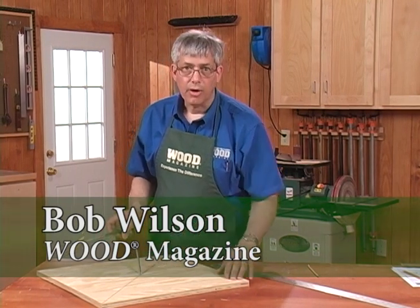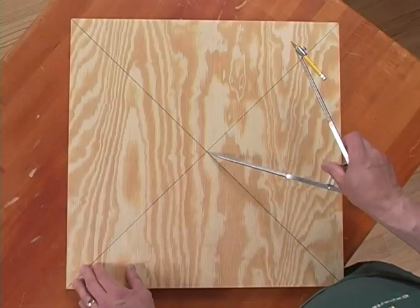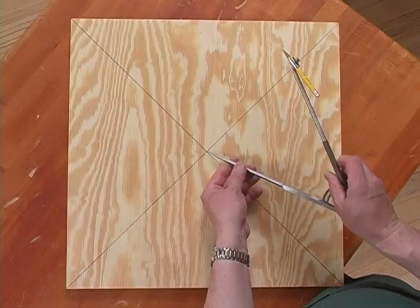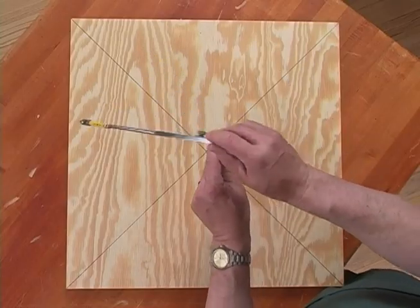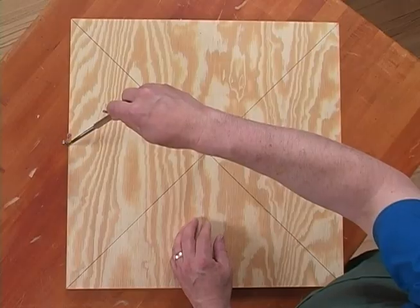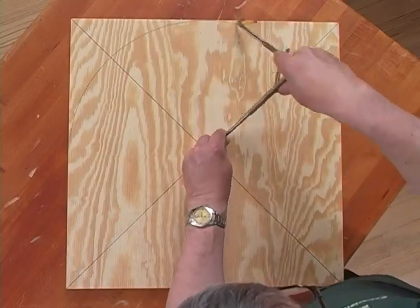We found the center of our piece of scrap here by drawing diagonal lines between the corners. Now we just place the tip of the compass at the intersection of the lines and scribe a line all the way around.